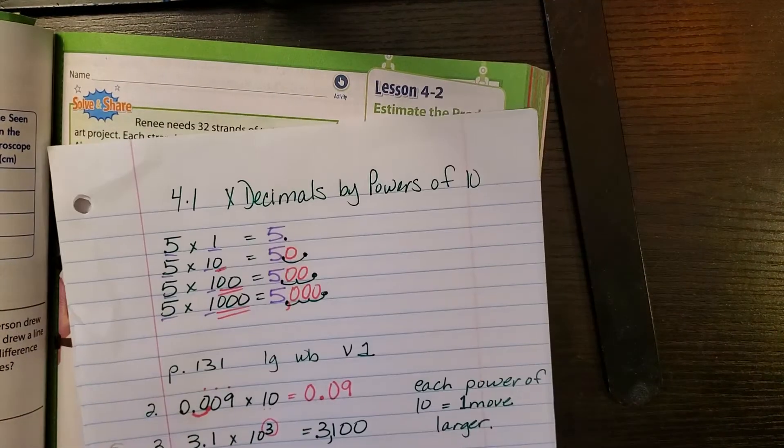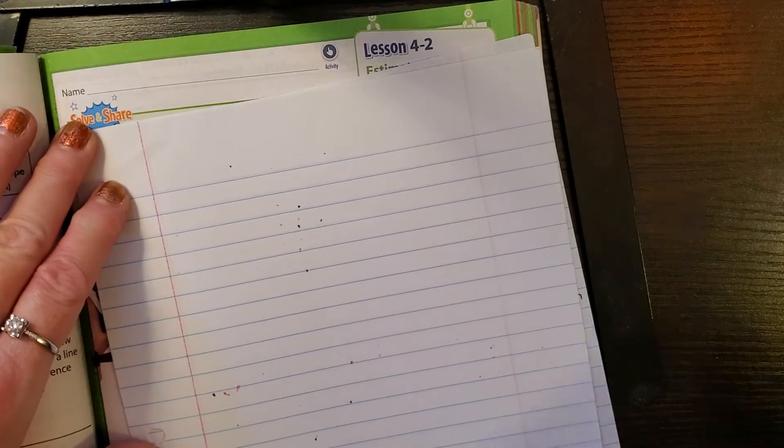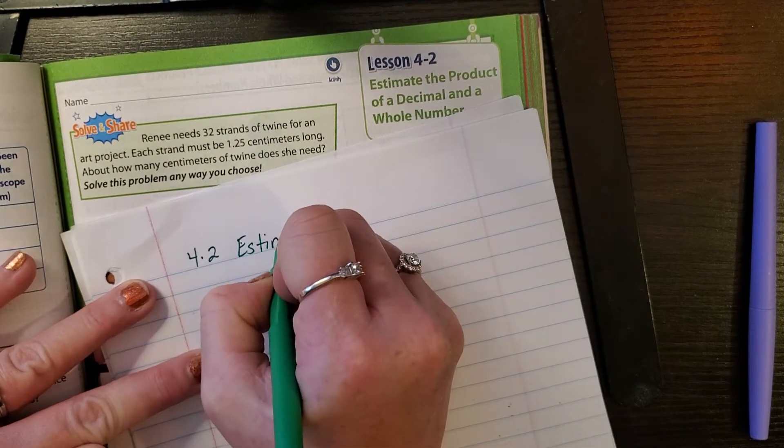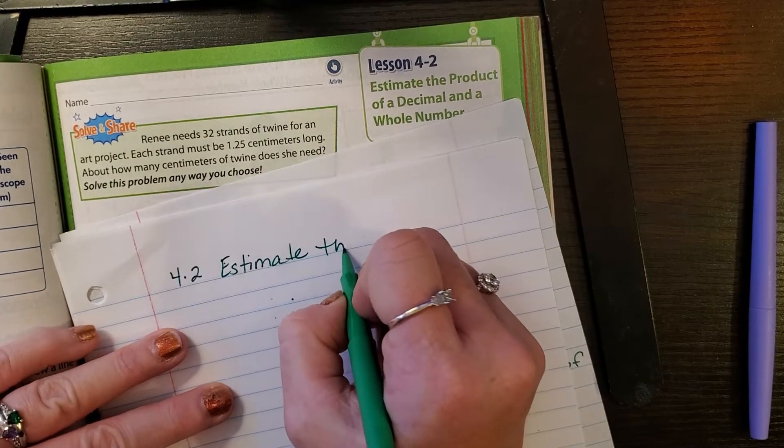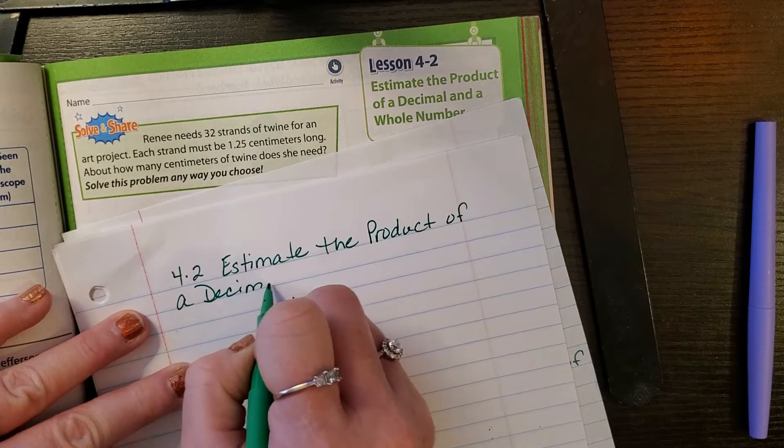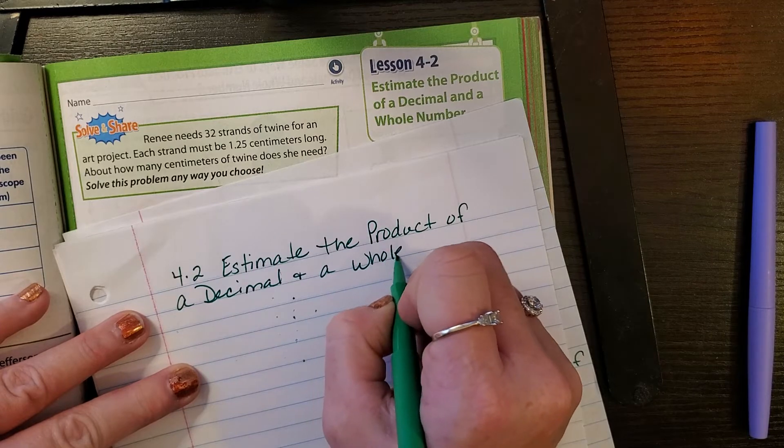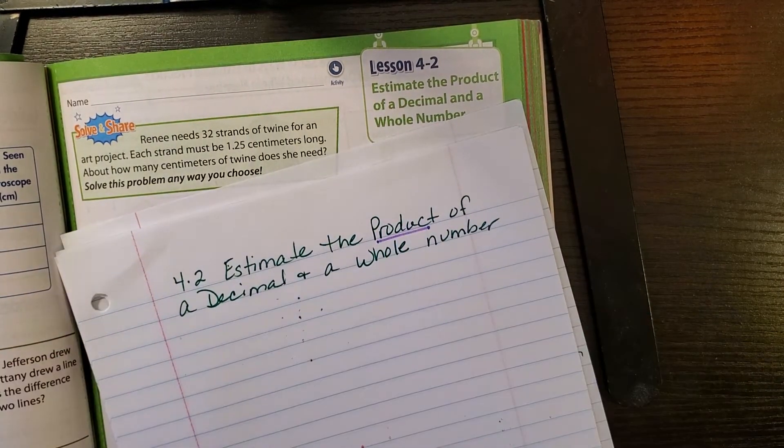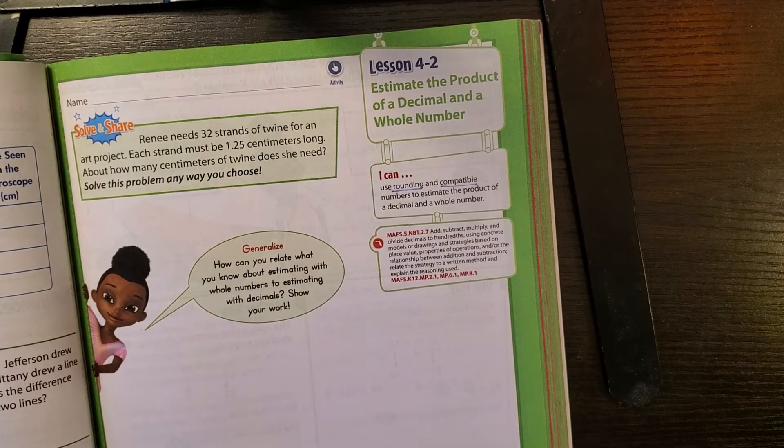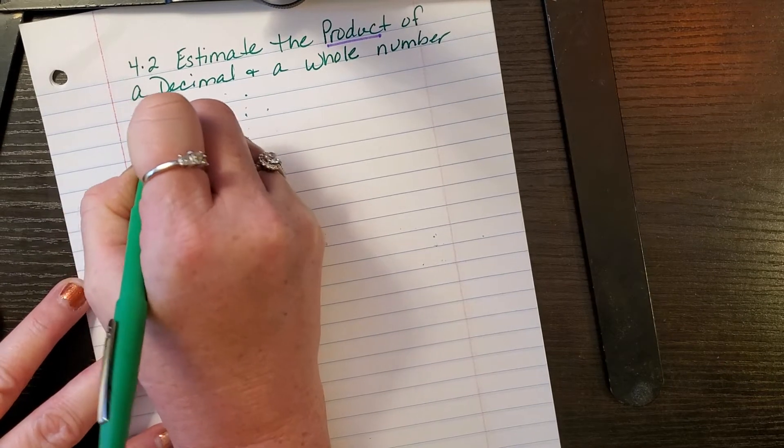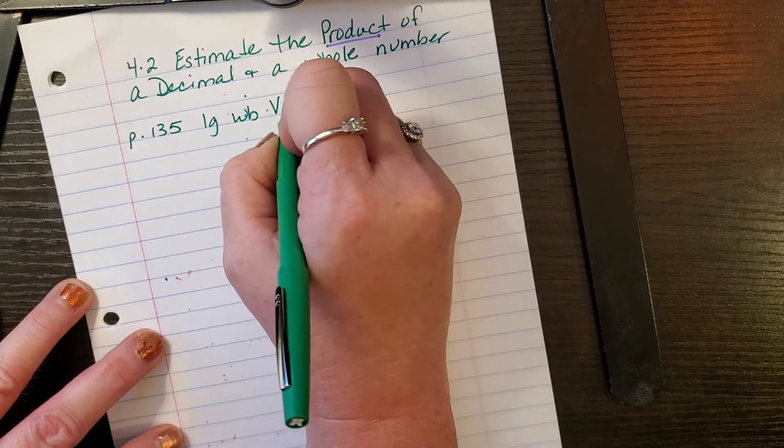So you will be on the next blank page of your math journal. And we are doing lesson 4.2, estimate the product of a decimal and a whole number. How do I know that I'm going to be multiplying by this statement? I hope you said because of the use of the word product, because product is the answer to a multiplication problem. So we are in the large workbook, volume one, page 135.